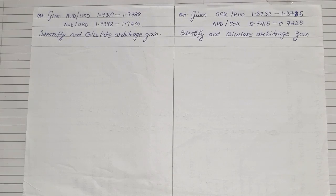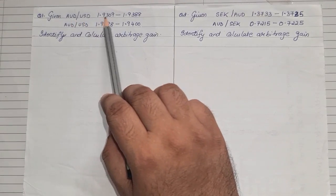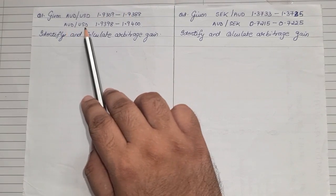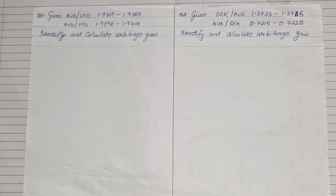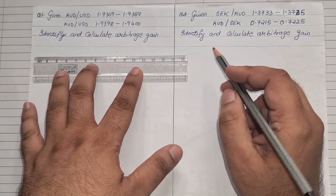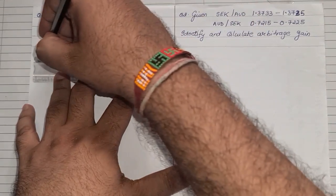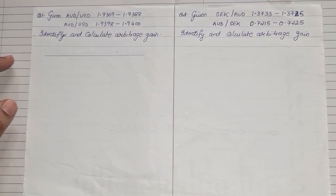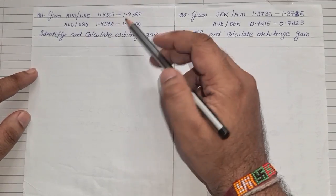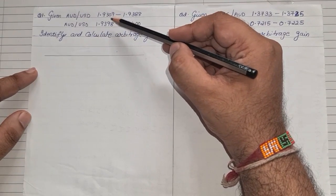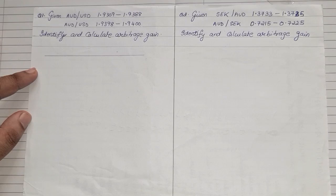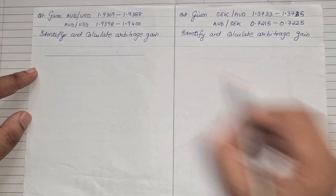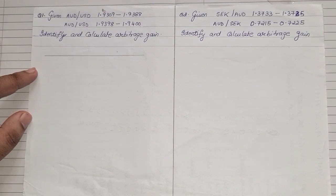For the first question, AUD to USD — they give you a bid rate and ask rate, and again AUD to USD with another bid rate and ask rate. To solve this, we make a straight line as a working note. Among the four rates given, look at the two bid rates: 1.9309 and 1.9398. Whichever is the smallest bid rate, mark that as b1. The other one will be b2.